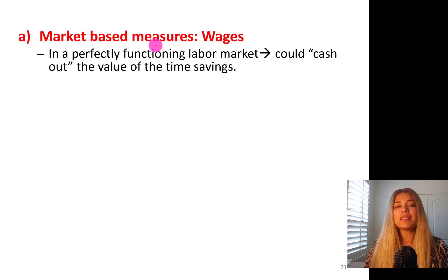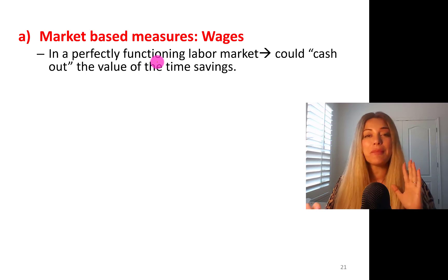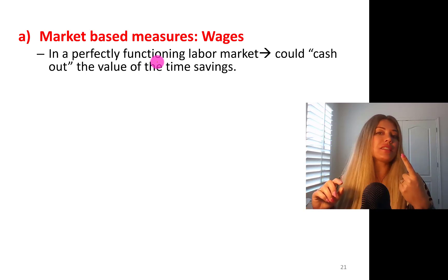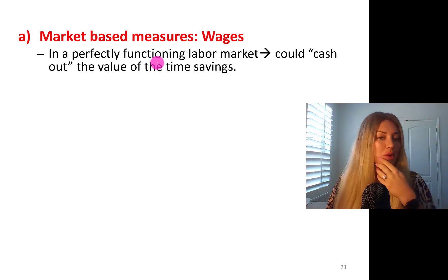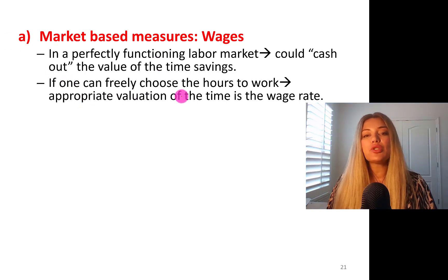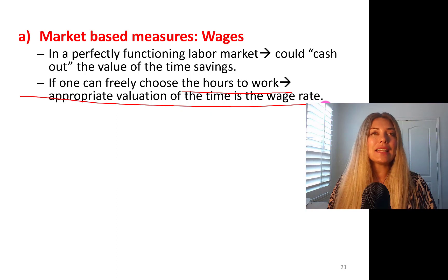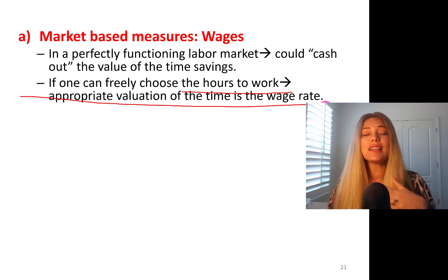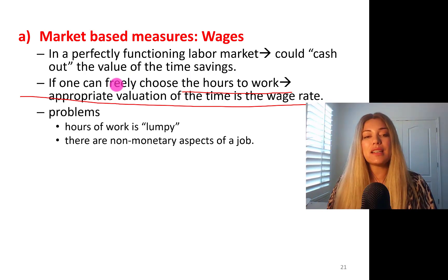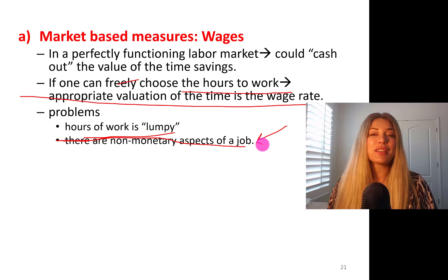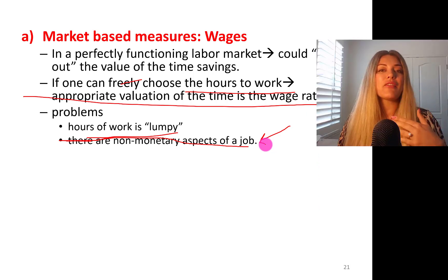In a perfectly functional labor market, you could cash out the value of the time savings. If I'm saving one hour per day and I get paid $20 per hour, my savings would be $20 per day because I could be working instead of sitting in traffic. If one can freely choose the hours of work, the appropriate valuation of time is the wage rate. However, problems arise because hours of work are lumpy and there are non-monetary aspects of the job — compensating wage differentials — where some aspects of the job are valuable to workers but not in terms of money.